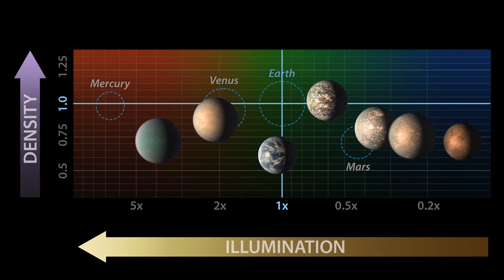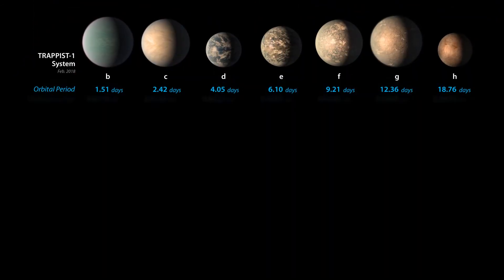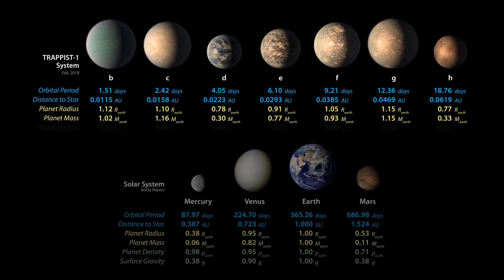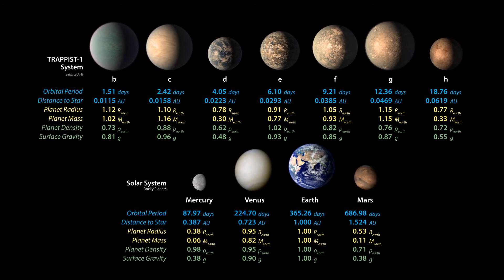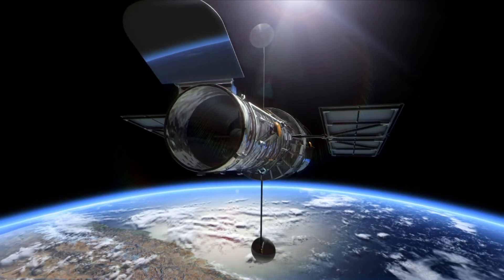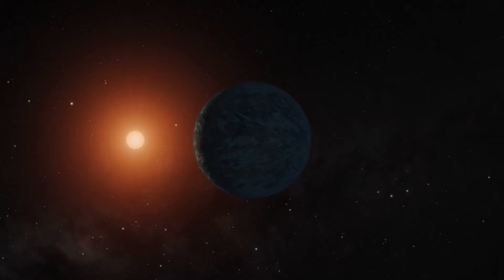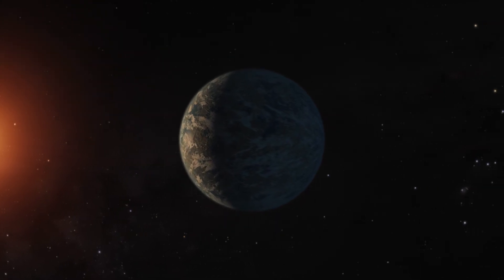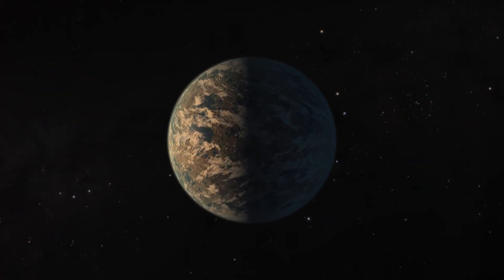Remarkably, we now know more about TRAPPIST-1 than any other planetary system besides our own. And we are still learning more. Hubble has been able to rule out puffy, hydrogen-rich atmospheres around five of these planets so far, strengthening the conclusion that they are rocky and potentially rich with water.